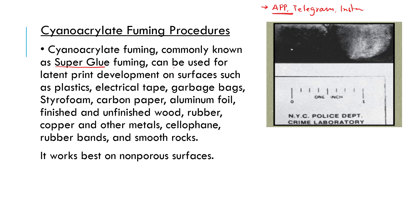Cyanoacrylate fuming, commonly known as superglue fuming, is used for latent fingerprint development. It works on surfaces such as plastic, electrical tape, garbage bags, foam surfaces, carbon paper, aluminum foil, unfinished and finished wood, rubber, copper and other metals, cellophane, rubber bands, and smooth rocks — almost every surface.